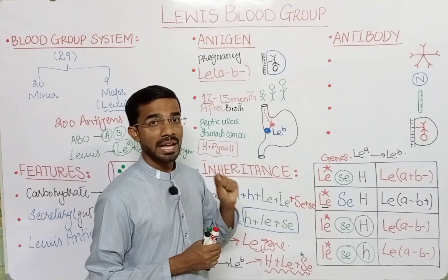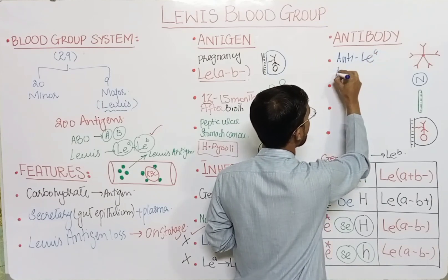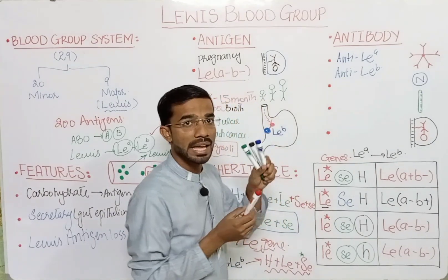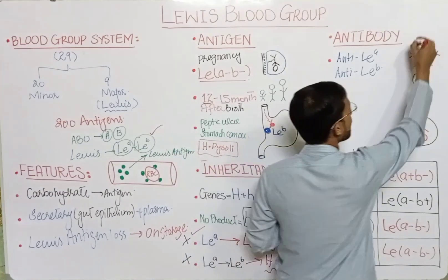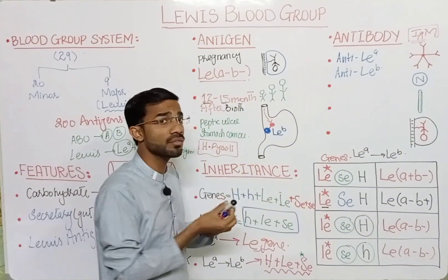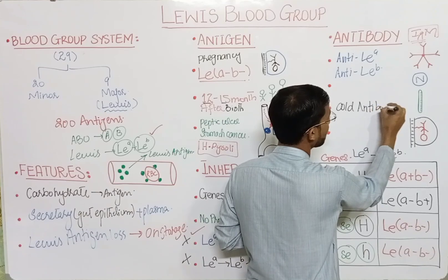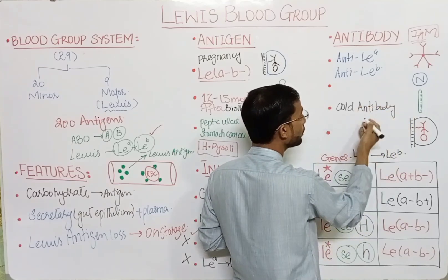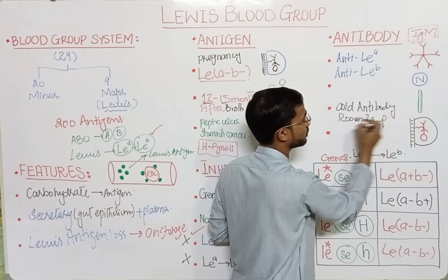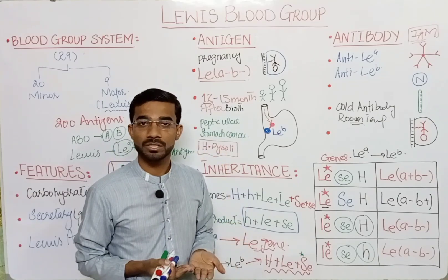Regarding antibodies, there are two antibodies: anti-LEa and anti-LEb. These are IgM in nature — they are cold antibodies, meaning they react at room temperature, or below 37 degrees Celsius, which is the body temperature.